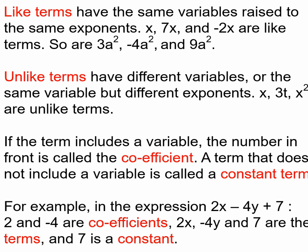In this example, 2x - 4y + 7: 2 and, be careful here, -4 are the coefficients. Remember that sign goes with the number, so the -4y—that subtraction sign is also a negative, saying that 4 is negative. They're the coefficients. 2x, -4y, and 7 are terms, and then 7, because it has no variables, is considered a constant.